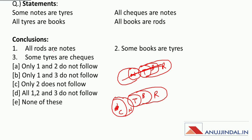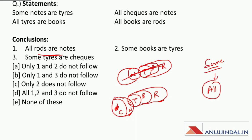Now let's check the conclusions. Conclusion: all rods are notes. Between rods and notes there is a relation of 'some'. In the case of 'some', 'all' takes the answer of possibility. Agar some ka case hoota hai, toh us mein joh 'all' hoota hai woh possibility leta hai. Aur yeh kya hai? Definite statement hai. Which means this will be incorrect.